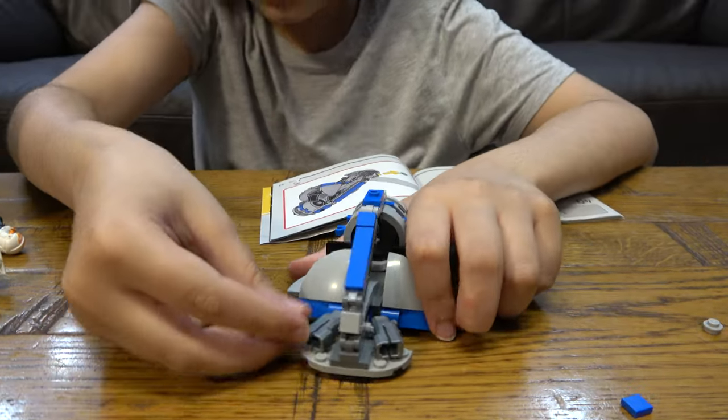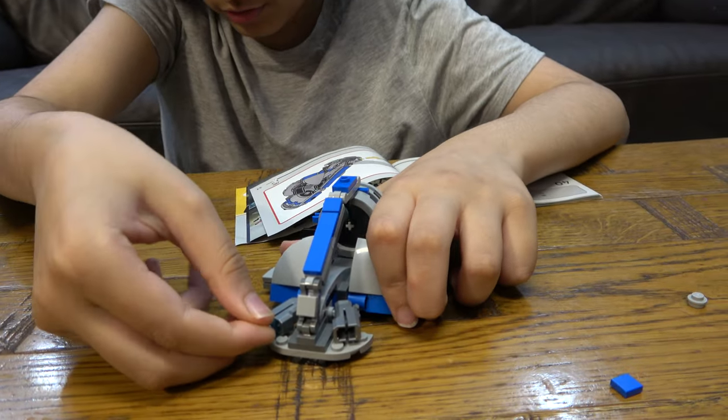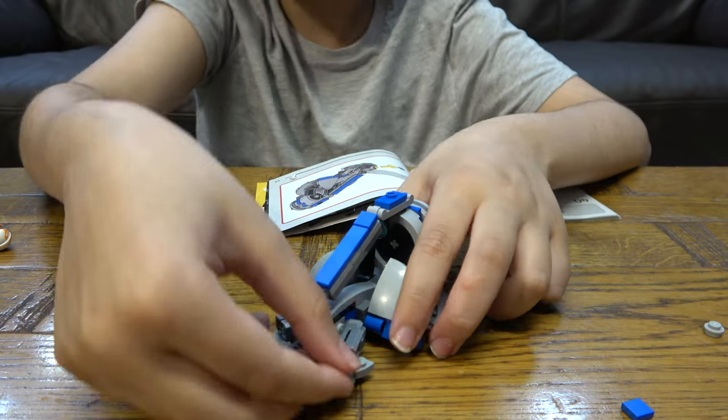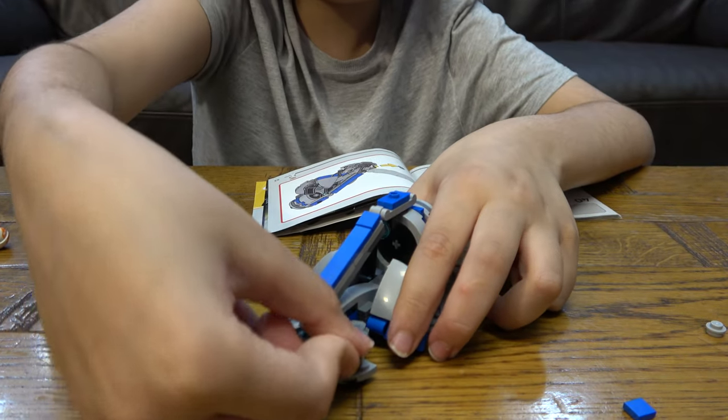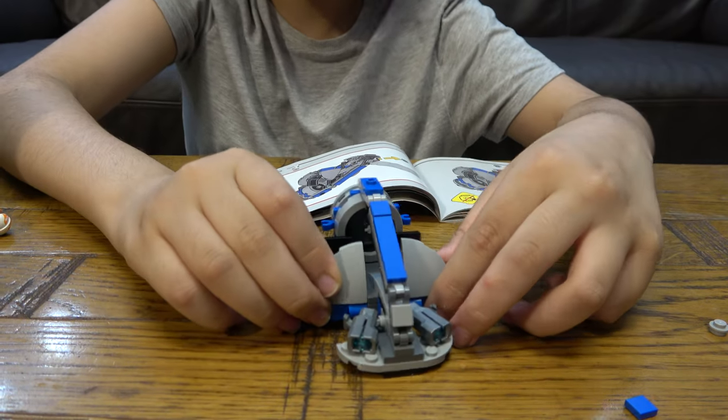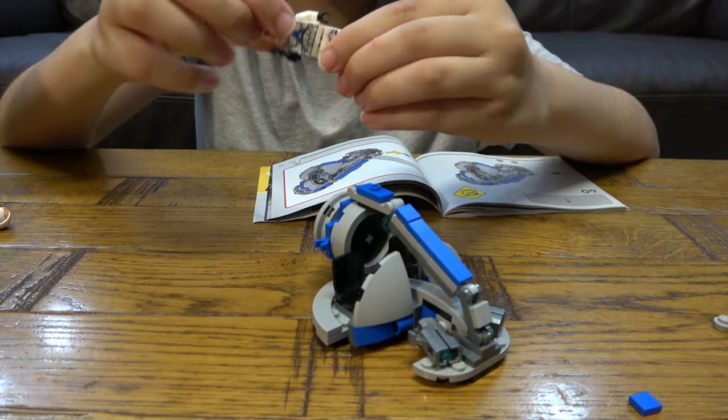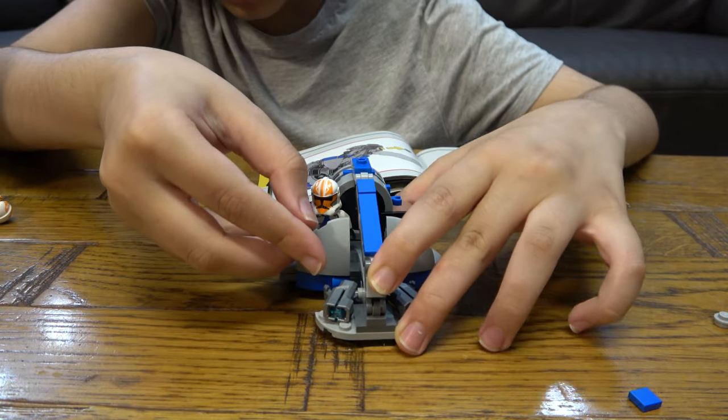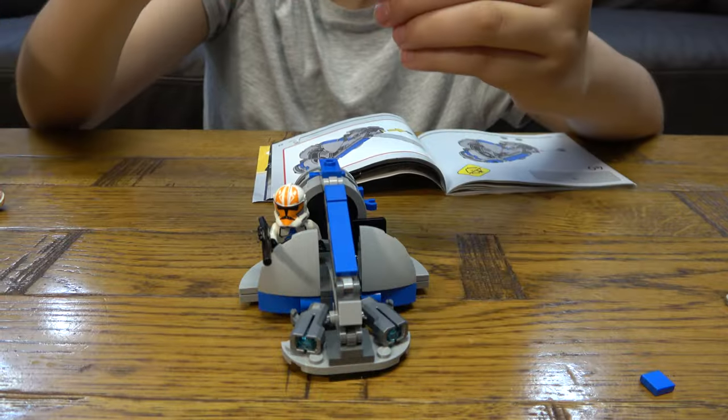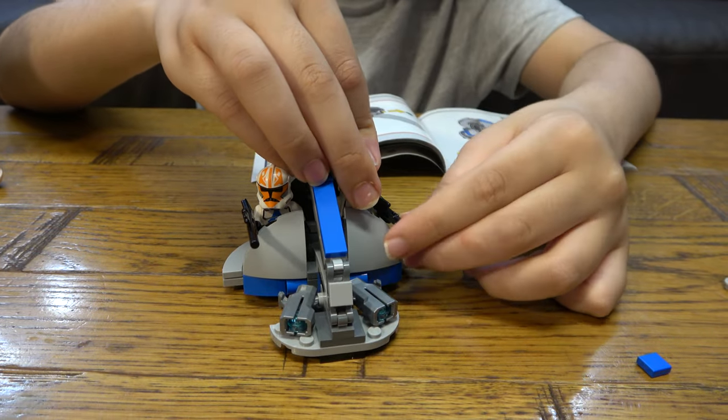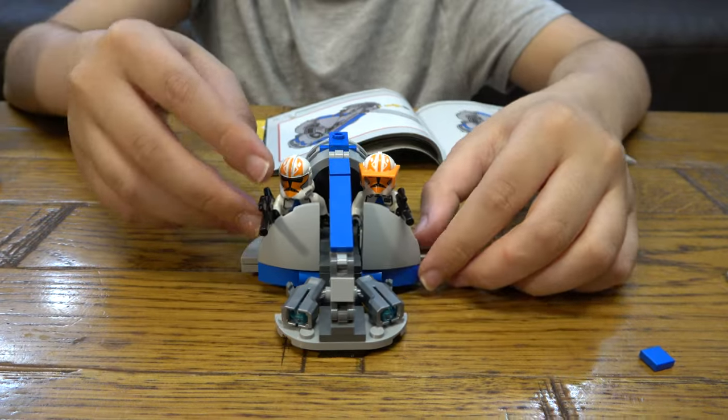I'm going to load up the shooters, the stud shooters. And guys, now our clone friends have some allies in the battlefield. We have to put the shield up, place the minifigures in like that, and put Clone Commander Vaughn in there as well.